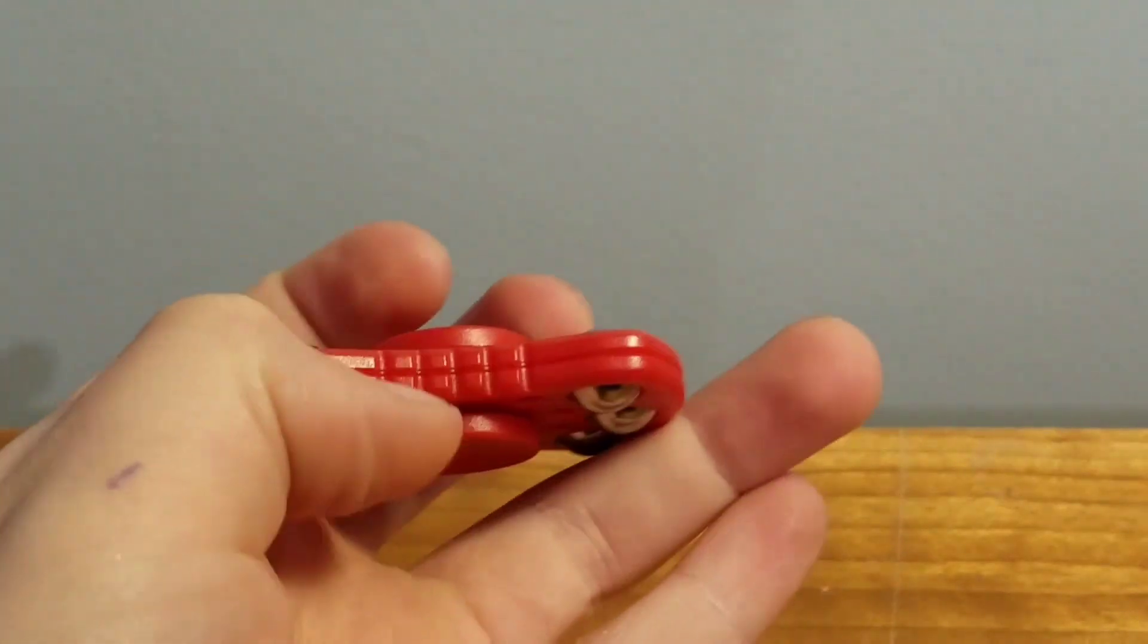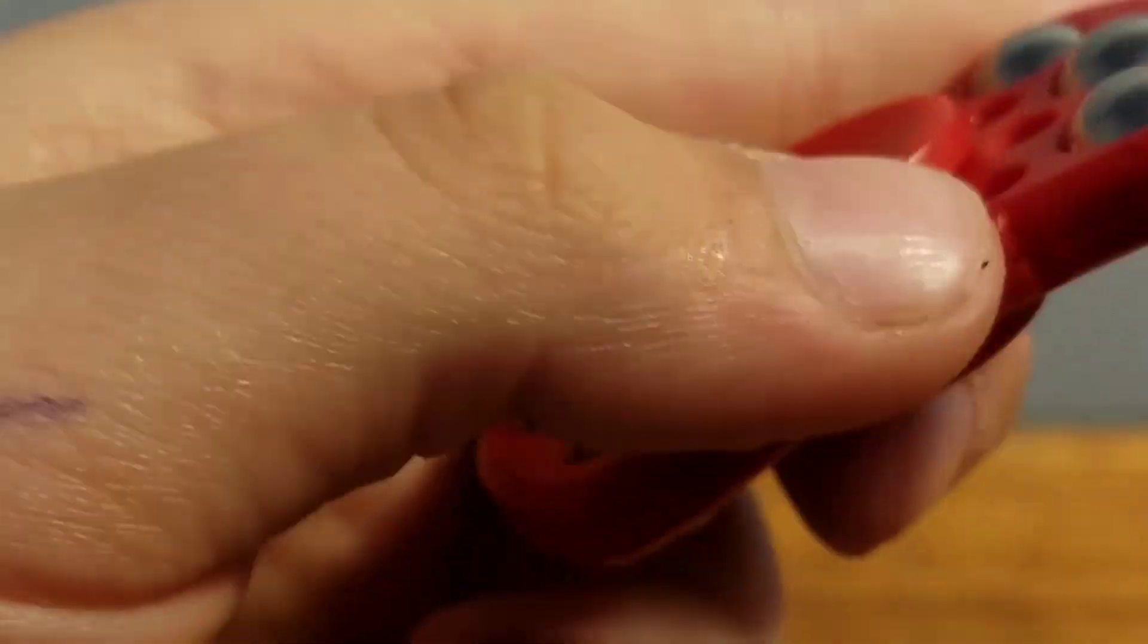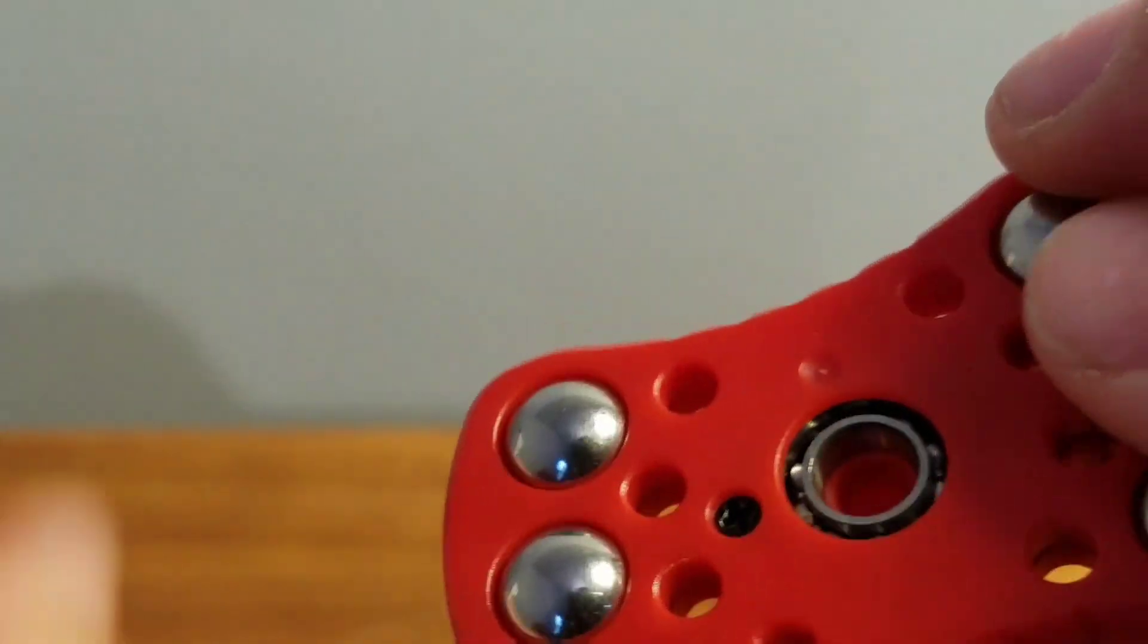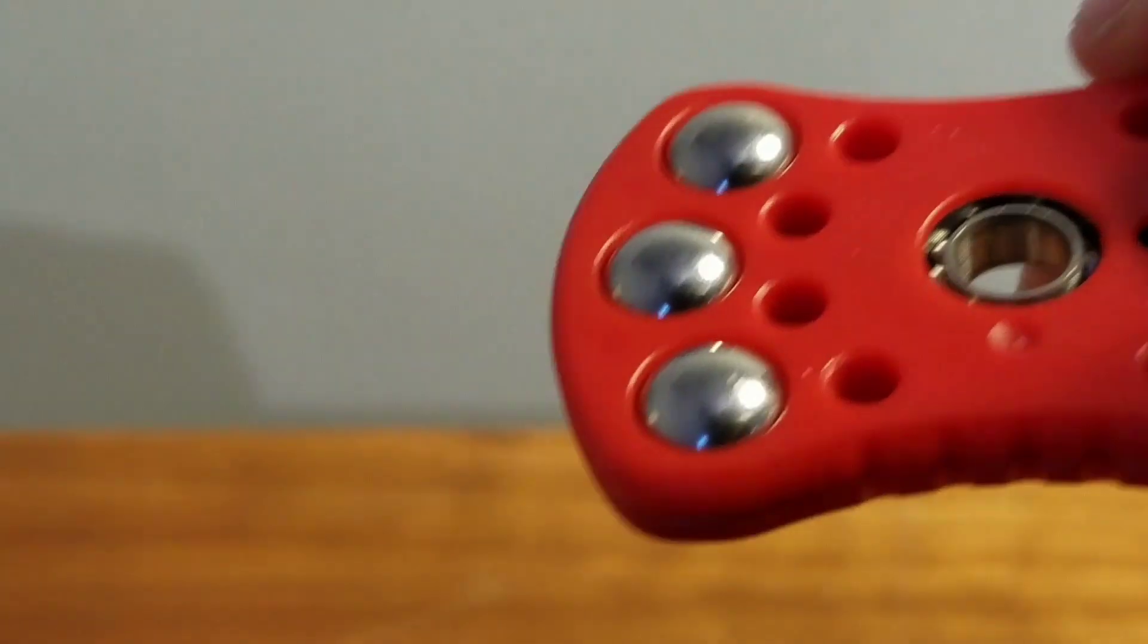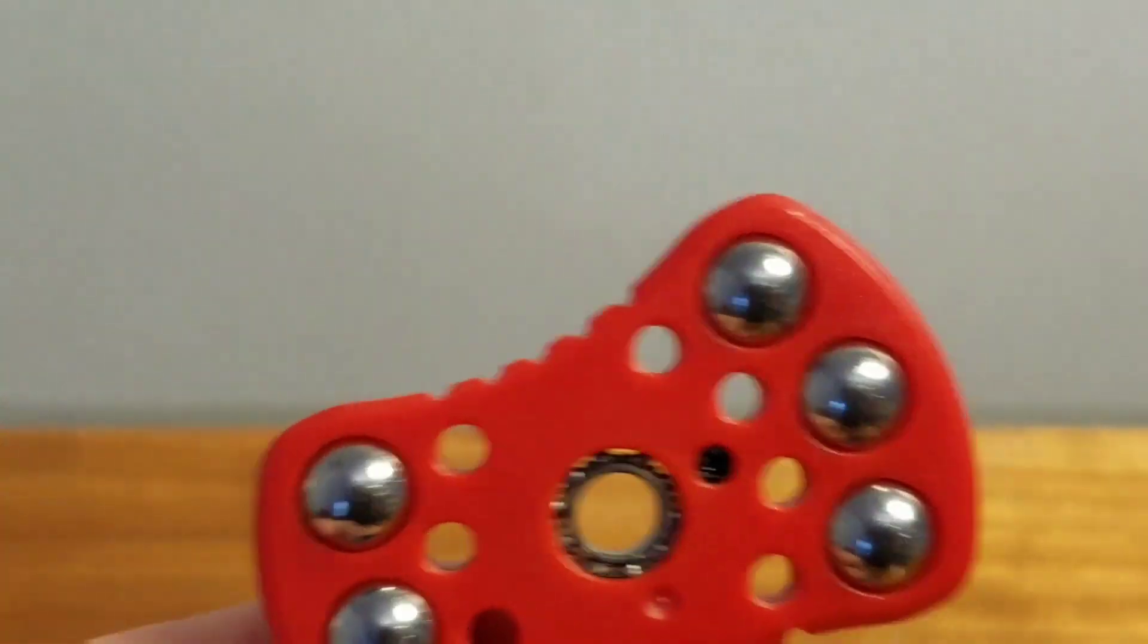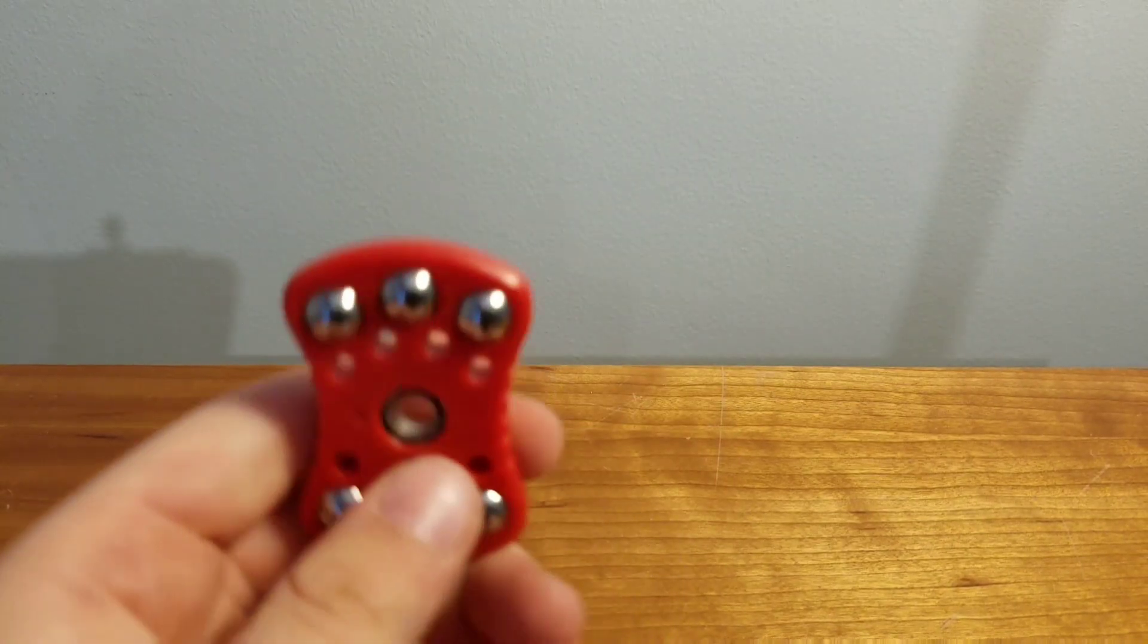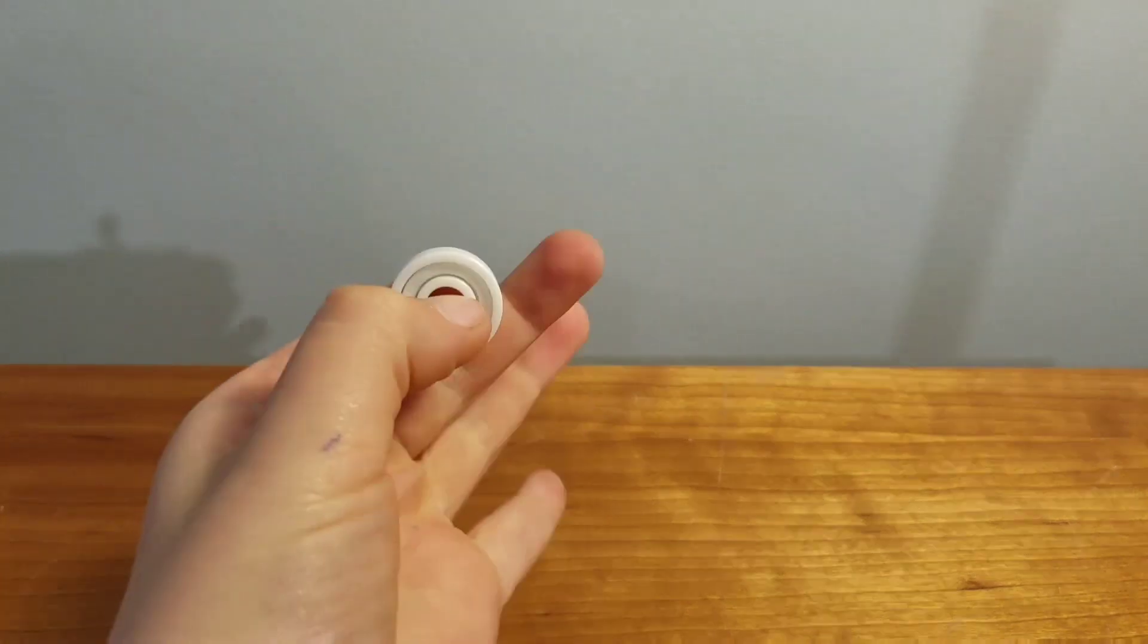First thing you're going to want to do is locate your fidget spinner's caps, so right here, and go ahead and take them off. Mine's a peel-off cap, like so, and they just peel off. You can take a knife under there to get it off. This will reveal the type of bearing - this is an R188 bearing. You'll also have bearings like this, a normal ceramic bearing, and metal ones.